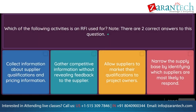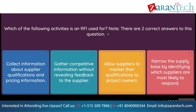Question: Which of the following activities is an RFI used for? Note, there are two correct answers to this question. Option 1: collect information about supplier qualifications and pricing information. Option 2: gather competitive information without revealing feedback to the supplier. Option 3: allow suppliers to market their qualifications to project owners. Option 4: narrow the supply base by identifying which suppliers are most likely to respond.